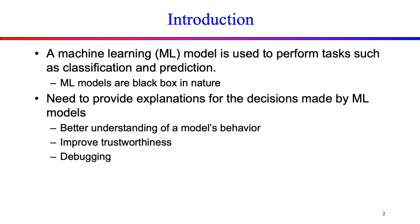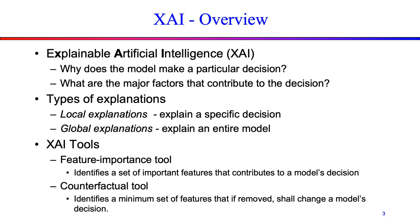So there is a need to provide explanations for the decisions made by ML models. Providing such explanations can help in better understanding of a model's behavior, can help in improving the trustworthiness of the AI system, and also from a software engineering perspective, explanations can help in model debugging. Explainable artificial intelligence, or XAI, is a subfield of AI that focuses on creating approaches and tools that can automatically provide explanations for the decisions made by ML models.